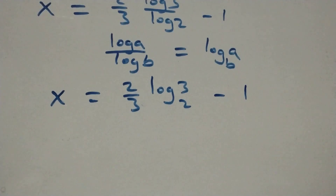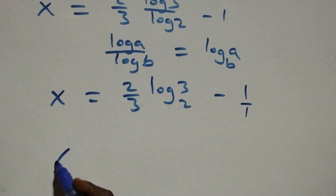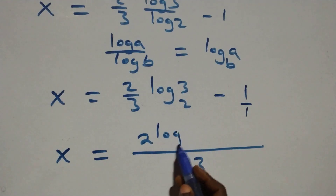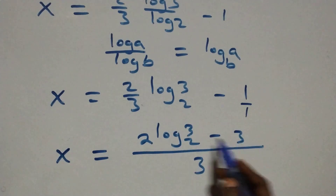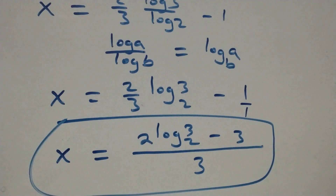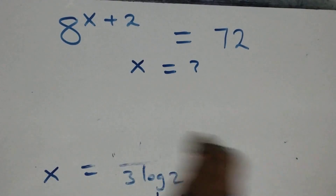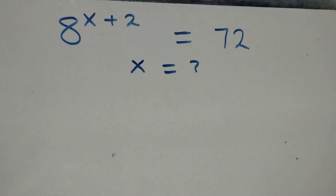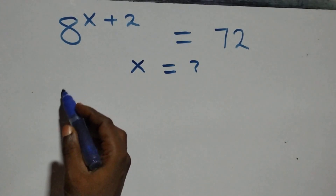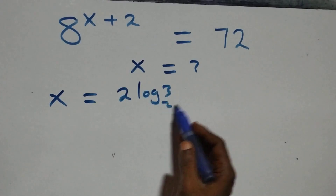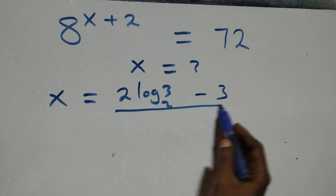We can bring this together as one fraction. Here 1 is written as 1 over 1, so the denominator is 3 throughout. We have x equals 2 log₂3 minus 3, all over 3. Therefore, x equals (2 log₂3 − 3) / 3. We now substitute this value of x back to verify it satisfies the original problem.